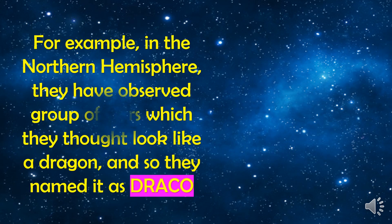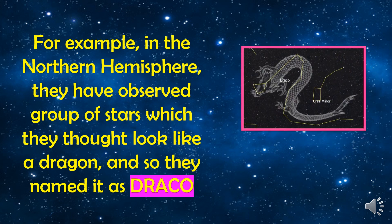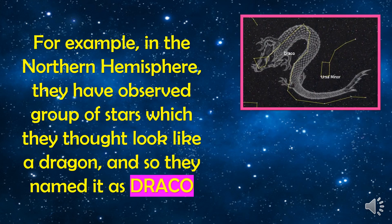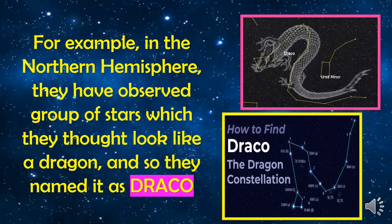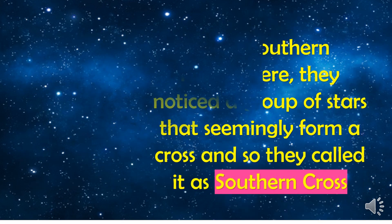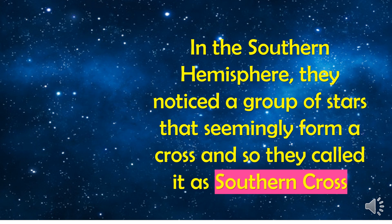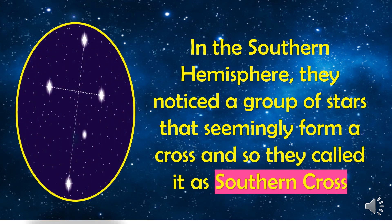For example, in the northern hemisphere, they observed a group of stars which they thought looked like a dragon, and so they named it Draco. While in the southern hemisphere, they noticed a group of stars that seemingly formed a cross, and so they called it the Southern Cross.